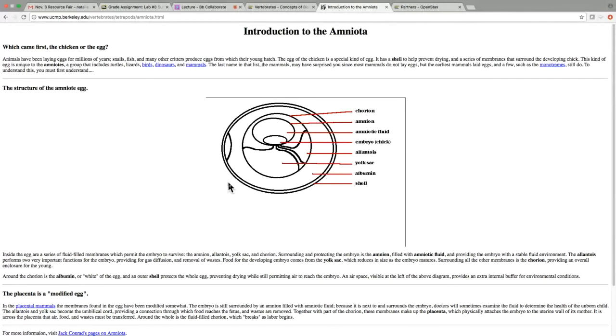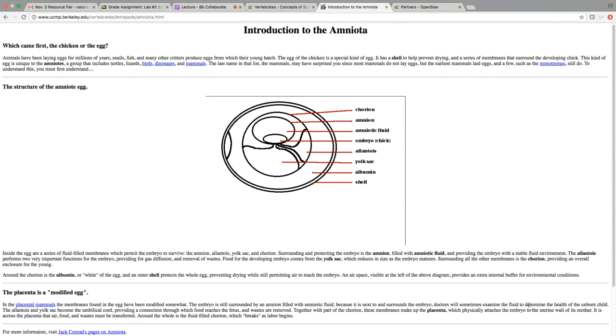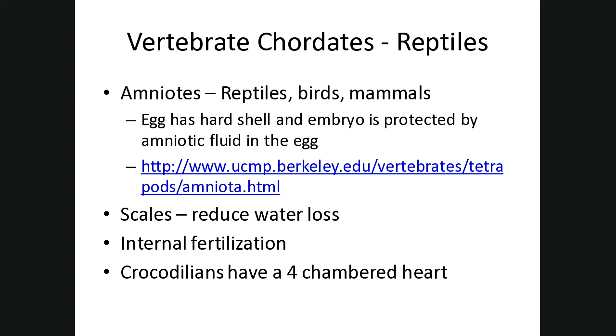The organisms that have this type of egg are called amniotes. The reptile is the first group we've talked about tonight that has this type of egg. What else do reptiles have besides an amniotic egg? They also have scales, which prevent water loss. They have internal fertilization.